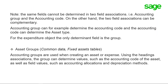Note that the same fields cannot be determined in two field associations — for example, accounting group and accounting code. On the other hand, two field associations can be complementary: accounting group can determine the accounting code, and the accounting code can determine the asset type for the expenditure.